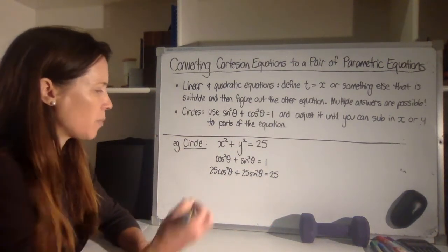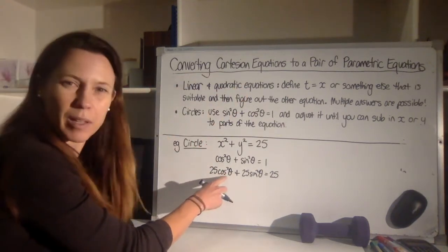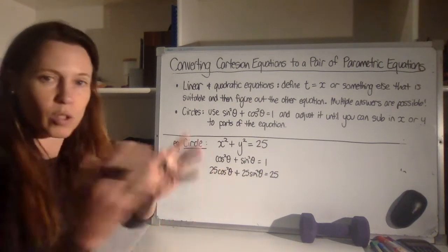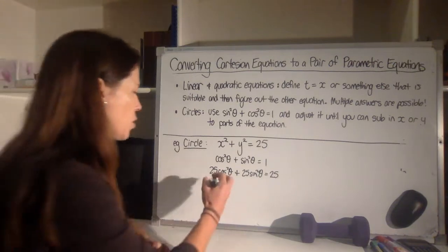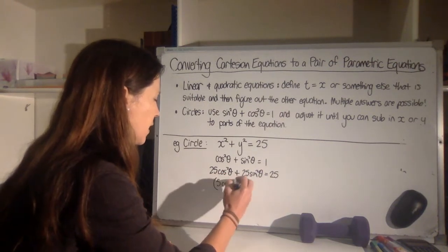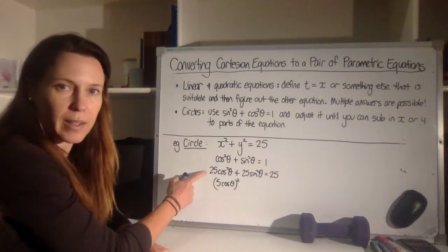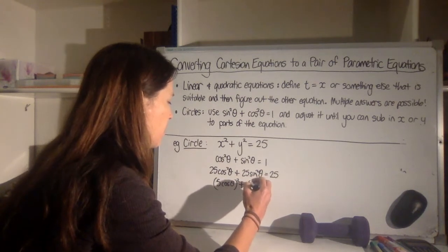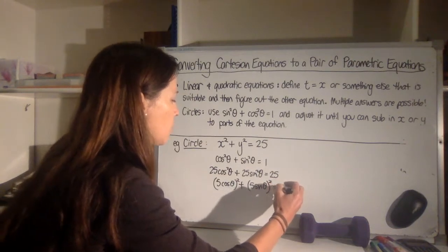Now I'm going to do a step here that you might later leave out but I don't want to leave anyone behind. Now we're trying to get it to the point where it's something squared, not something multiplied by something squared. So to me it makes sense that we want to make this into some stuff squared. I know that 25 is 5 squared. So if I actually put 5 cos theta in some brackets here and then square that, that gives me 25 cos squared theta, doesn't it? And now I can do the same thing over here. I've got 5 sine theta all squared equals 25.